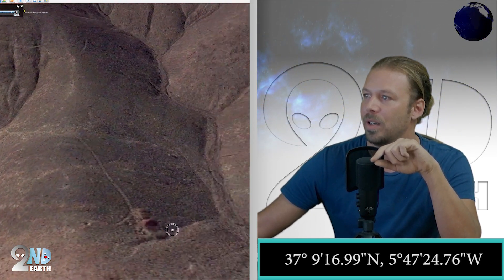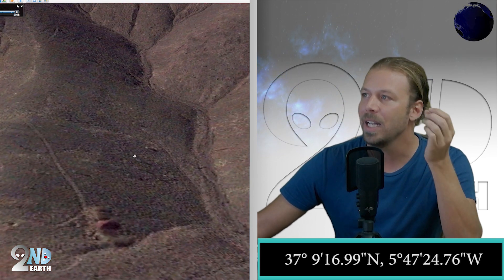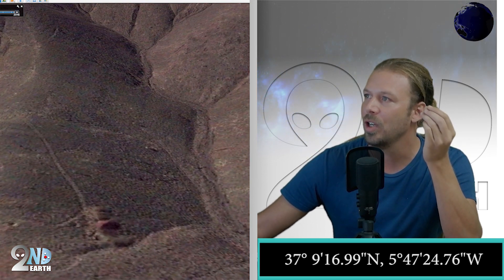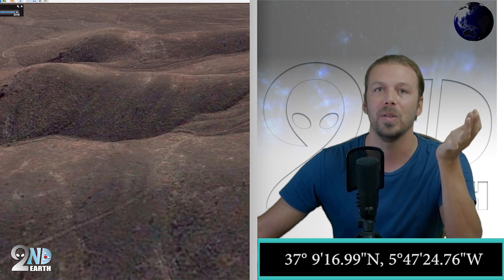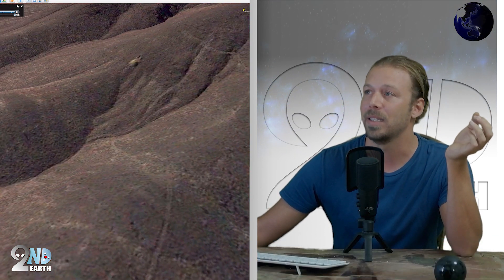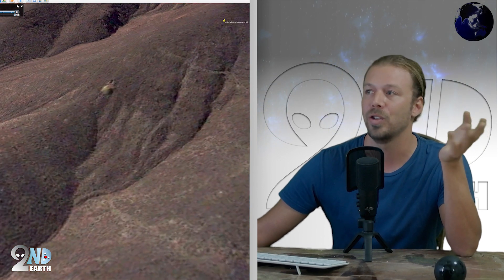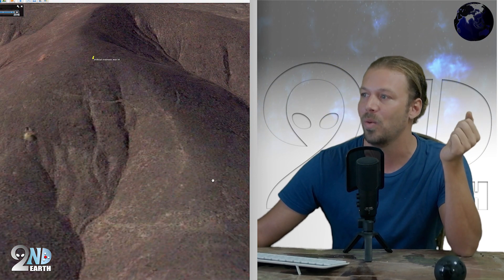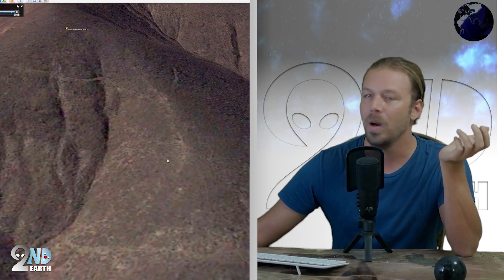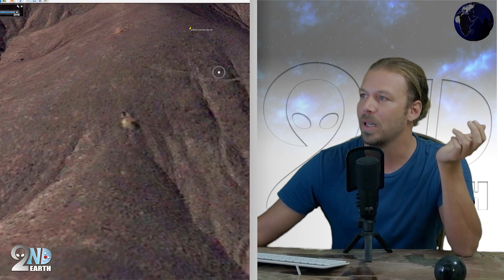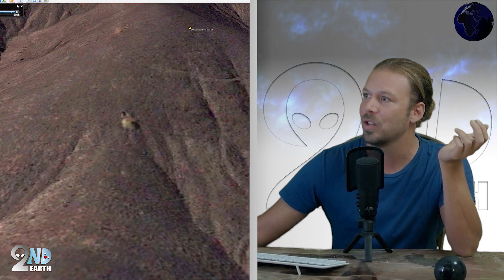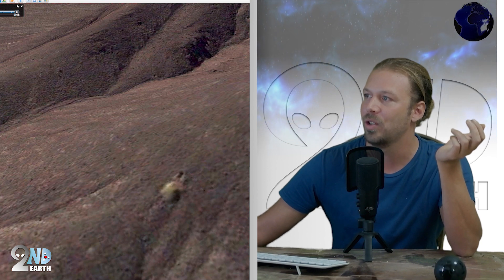Look at this. We got all kinds of obvious artificial structures. If this was a random mountain in Nevada, I might assume that this is like a mine that's embedded inside the mountain, but we know that there's no civilian mines in Area 51. So the question is, where are these tracks heading? And if you look around the mountain range, you will see all kinds of strange rock-like structures that just kind of look a little bit too artificial to be natural.